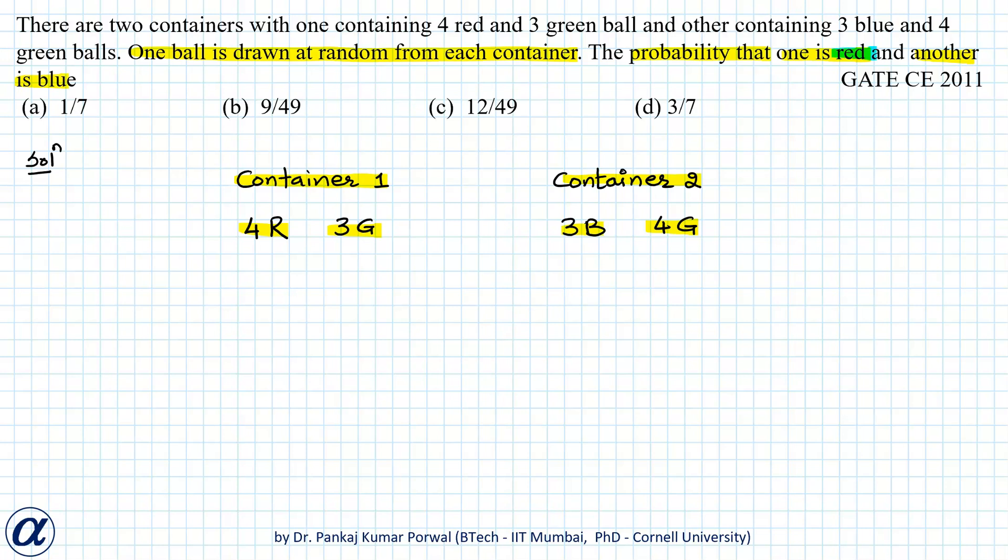Now here note that the red ball has to come from container one because only container one contains red balls, and the blue ball has to come from container two because only container two contains blue balls.